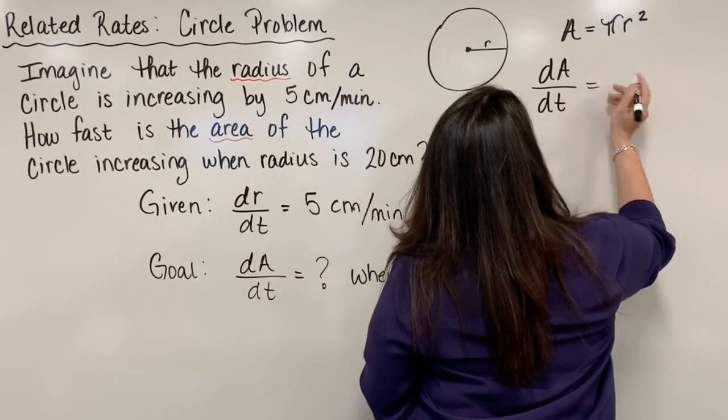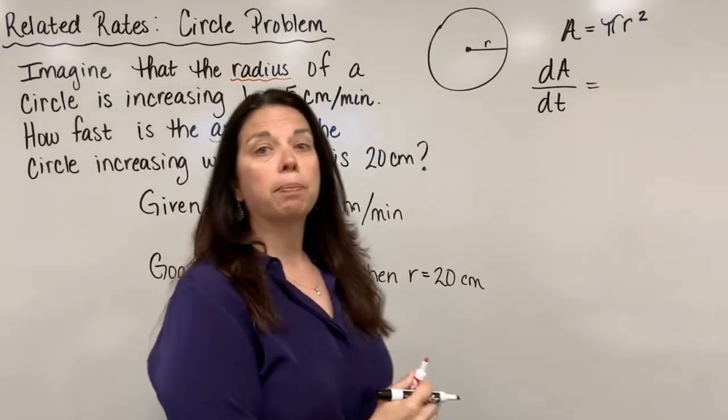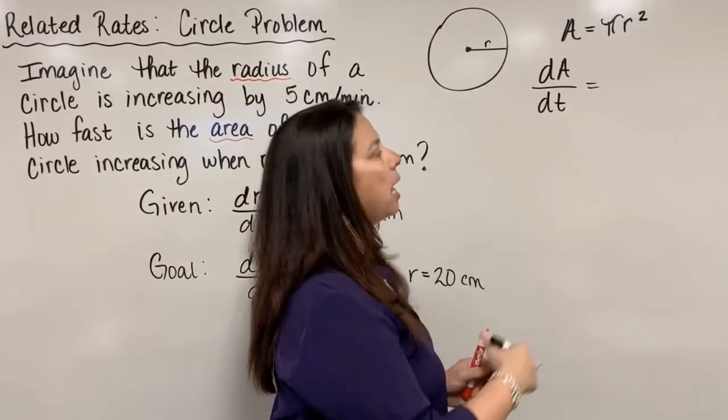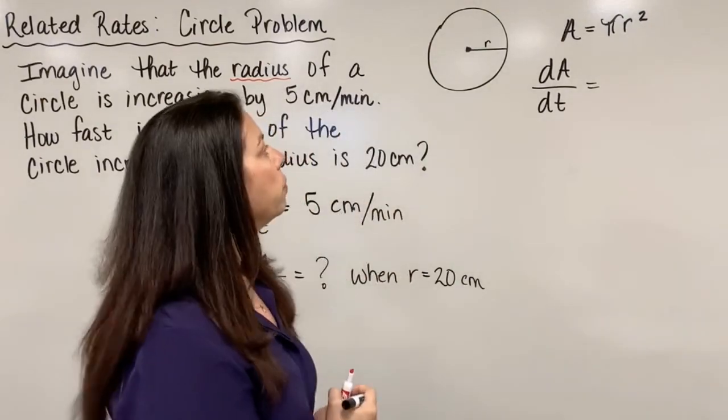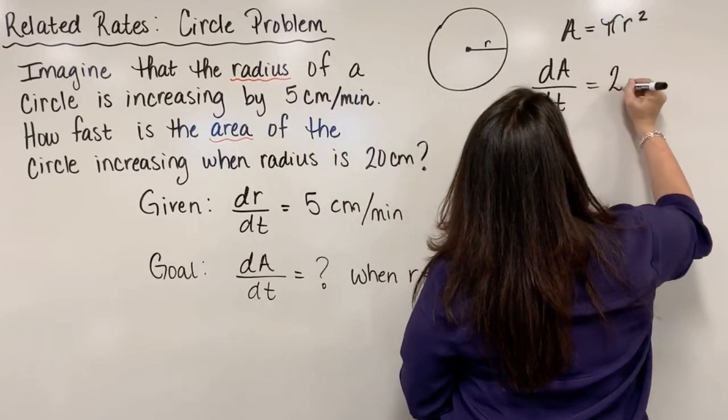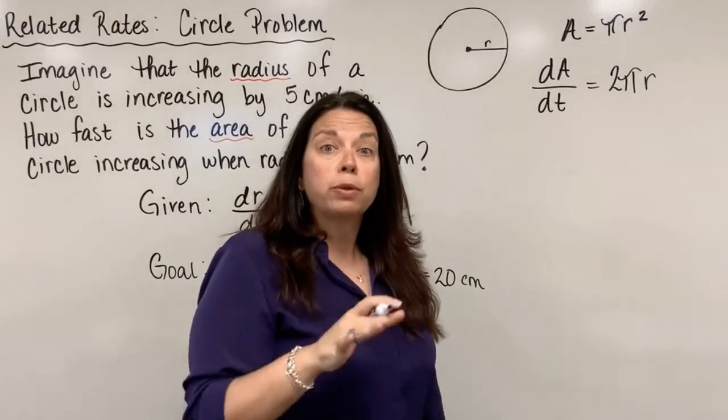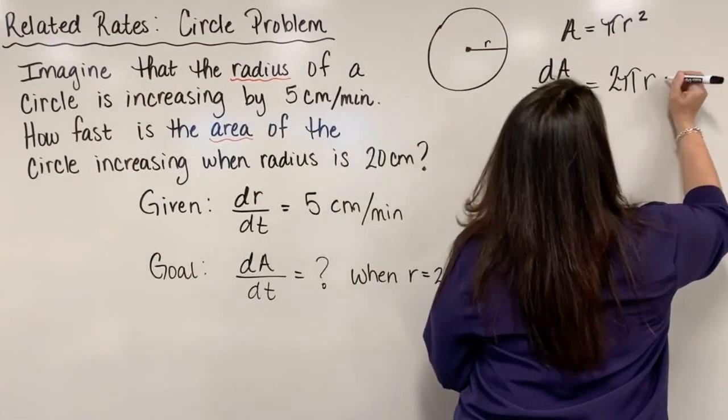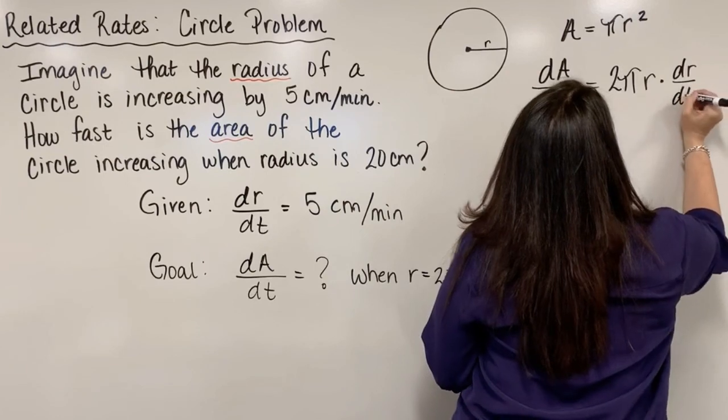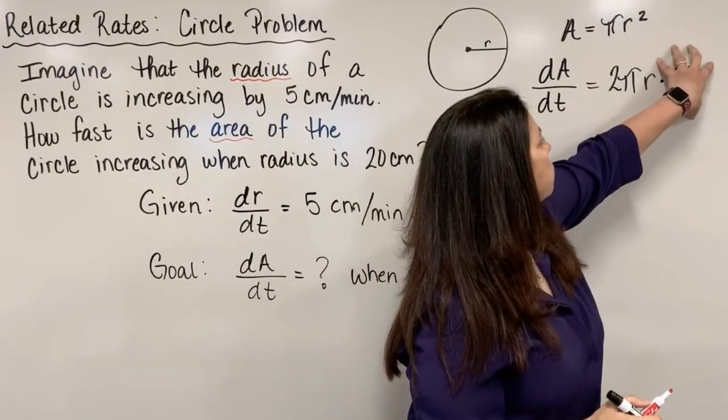So dA/dt equals, now let's take the derivative on the right hand side. Well, pi is a constant. R is not. That is changing. That is a variable that's changing and it has a power of 2. So I can use my power rule that says bring that 2 down in front. And so when I do, I end up with 2 pi r, but I was taking the derivative of r with respect to time. So I need my notation, just like we saw in implicit differentiation, dr/dt. This tells the world that we took the derivative of r, but with respect to t. That's where this notation comes from.